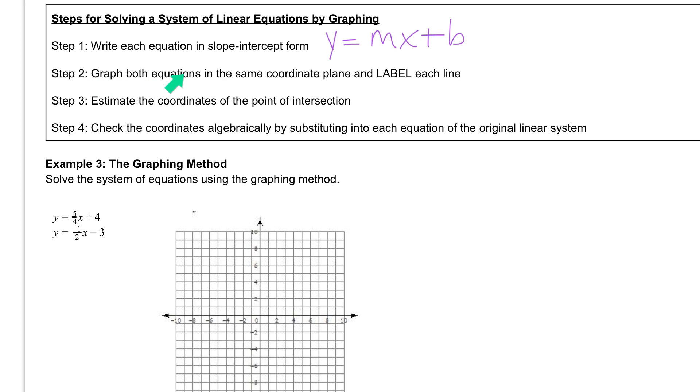Step 2, graph both equations in the same coordinate plane and label each line. Step 3, estimate the coordinates of the point of intersection. And finally you're going to check the coordinates algebraically by substituting into each equation of the linear system to make sure the point that you chose works.